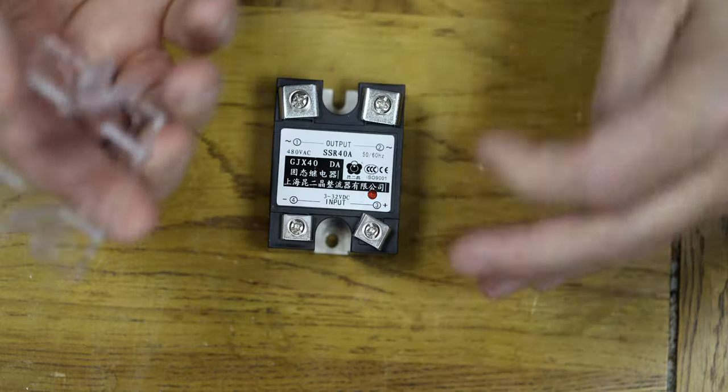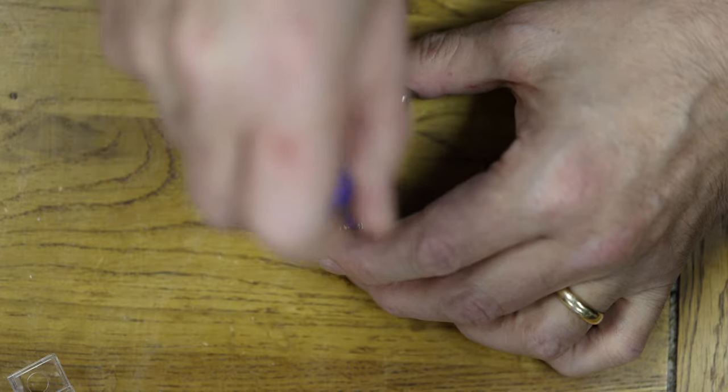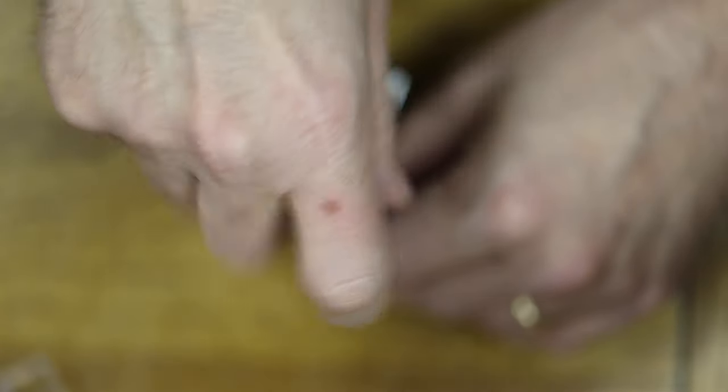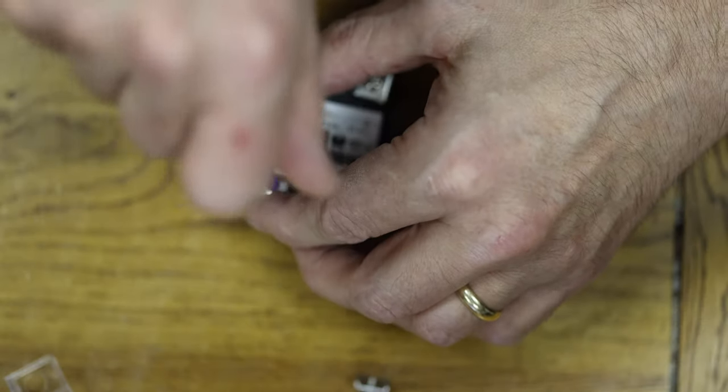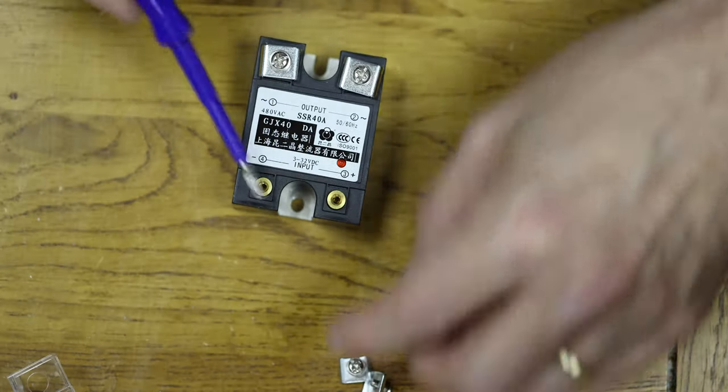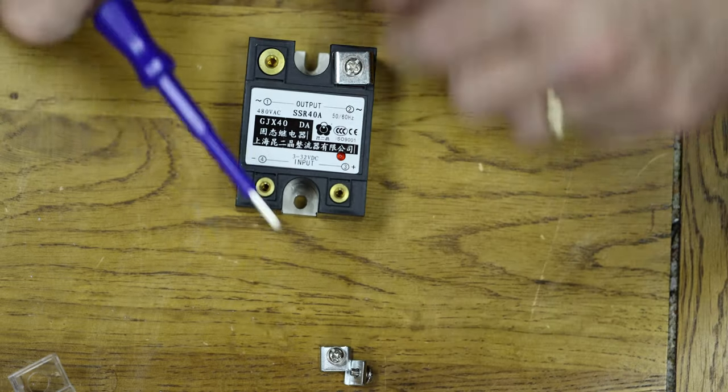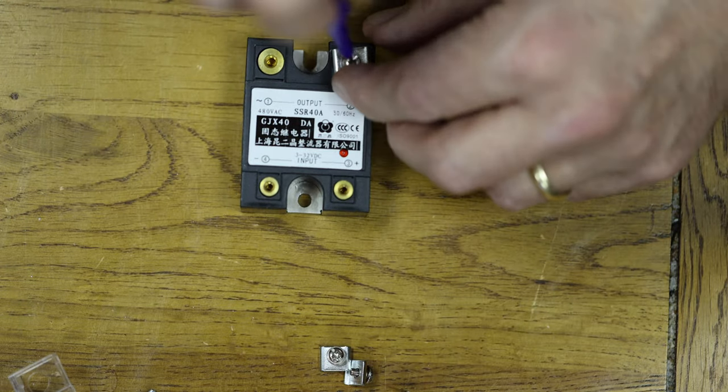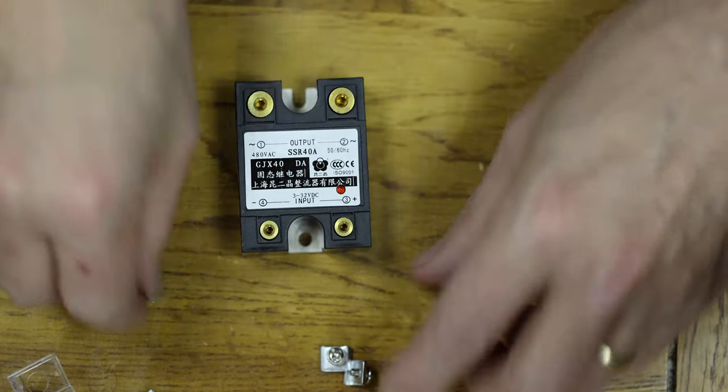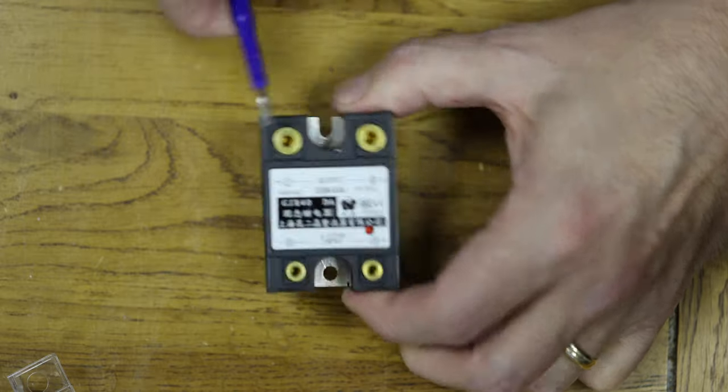Now this particular one has a nice plastic cover which is one of the main reasons I bought it. You can see there's some fairly substantial posts there and for the actual 40 amp even more substantial. And the first thing is this top comes off, it's just a little plastic cover.